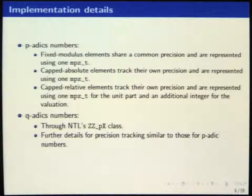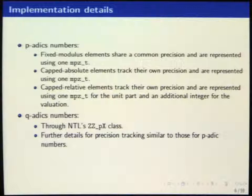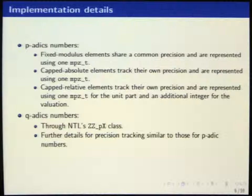For fixed modulus, you have one integer representing your p-adic number mod P to the N. In the capped absolute case, you also have that plus some precision tracking using maybe long integers. In the capped relative case, you also have some single-precision integers to track precision and some MPZ to represent the unit part. Unramified and Eisenstein extensions of the p-adics are represented using NTL's polynomials, and precision tracking is done in a similar way.